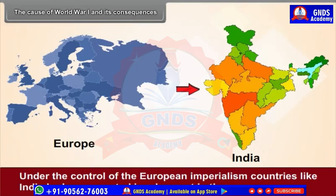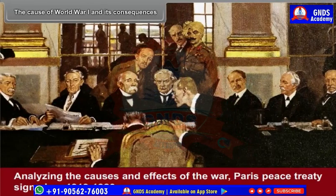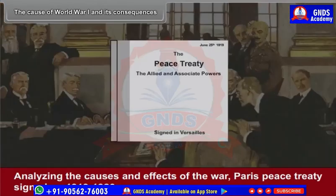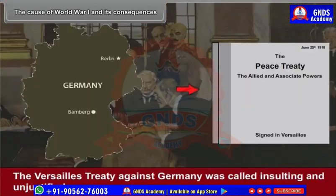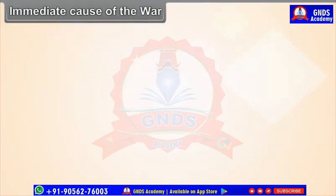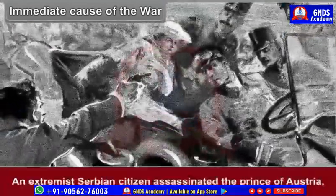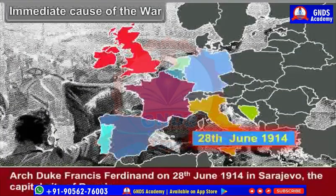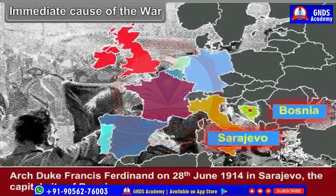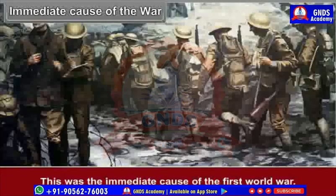Under the control of European imperialism, countries like India had an unwanted involvement in the war. Analyzing the causes and effects of the war, the Paris Peace Treaty was signed in 1919–1920, and many unjust sanctions were imposed on the defeated nations. The Versailles Treaty against Germany was called insulting and unjustified. The immediate cause of the war was the assassination of the Prince of Austria, Archduke Francis Ferdinand, on 28th June 1914 in Sarajevo, the capital city of Bosnia.